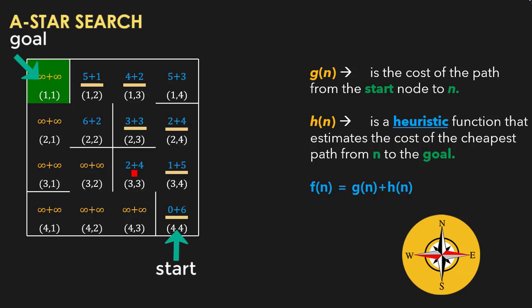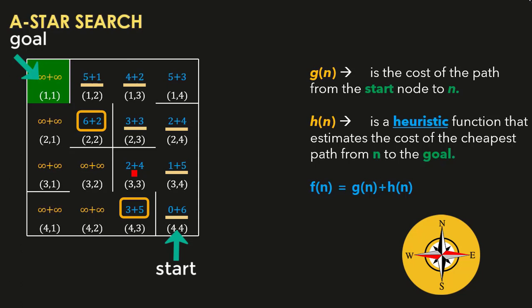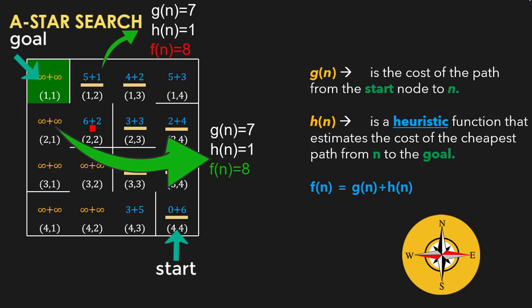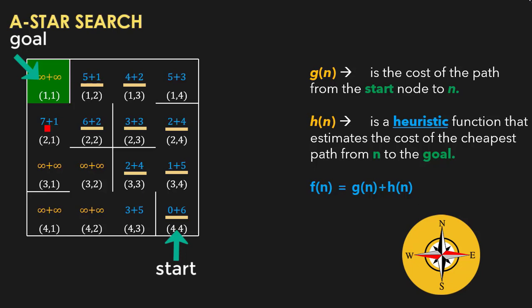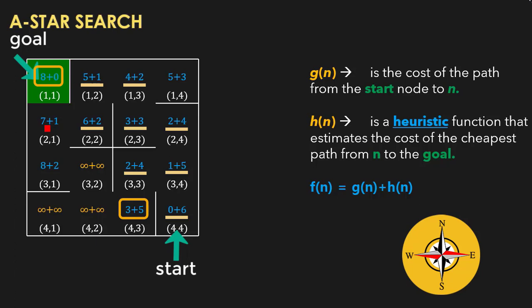From cell 3,3, the neighbor costs are calculated and one better cost is updated. We search for the minimum cost unexplored cell — two cells tie at cost 8, and we choose cell 2,2 since it has lower heuristic cost. We continue: the next cell is 2,1 with minimum cost 8 and lower heuristic cost. From 2,1, three neighbor costs are computed and two are updated. The cells with minimum cost now are two, and we choose the one with lower heuristic cost: cell 1,1 — and that is the goal. We have reached the goal.